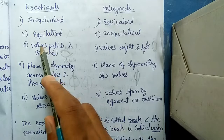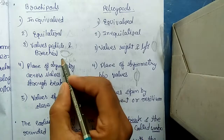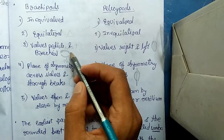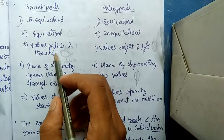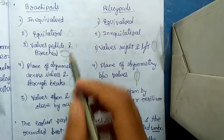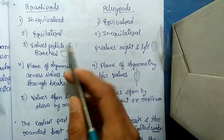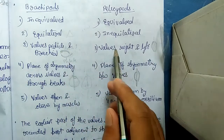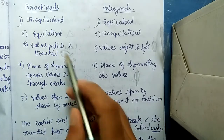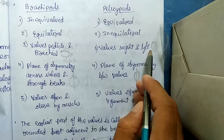The third difference concerns valve names. In Brachiopoda there are two valves: pedicle and brachial, also called dorsal and ventral. The pedicle valve is the one to which the pedicle muscle — a muscular stalk — is connected, and the other is the brachial valve. In Pelecypoda, the valves are simply called left valve and right valve, as you can see here.